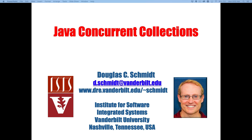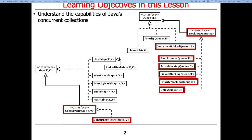What we're going to do now is talk about something called concurrent collections. And these, as we'll see, do better than the synchronized collections. There's a bunch of them: ConcurrentMap, ConcurrentHashMap, SynchronousQueue, ArrayBlockingQueue, LinkedBlockingQueue, ConcurrentLinkedQueue, and various others.